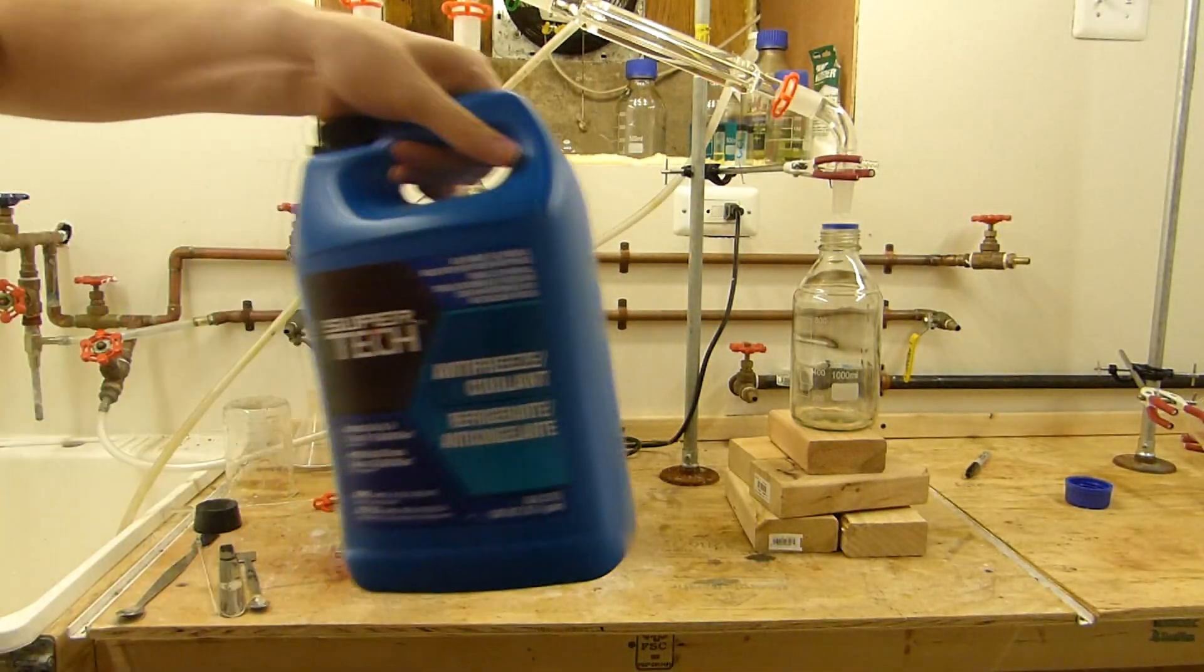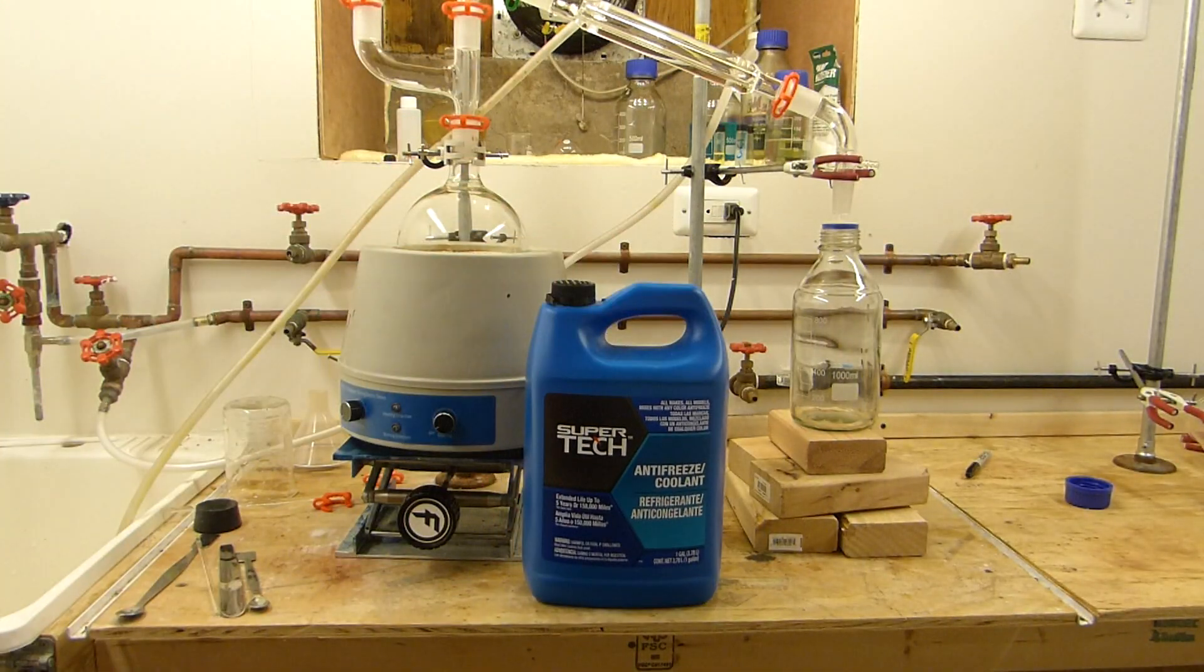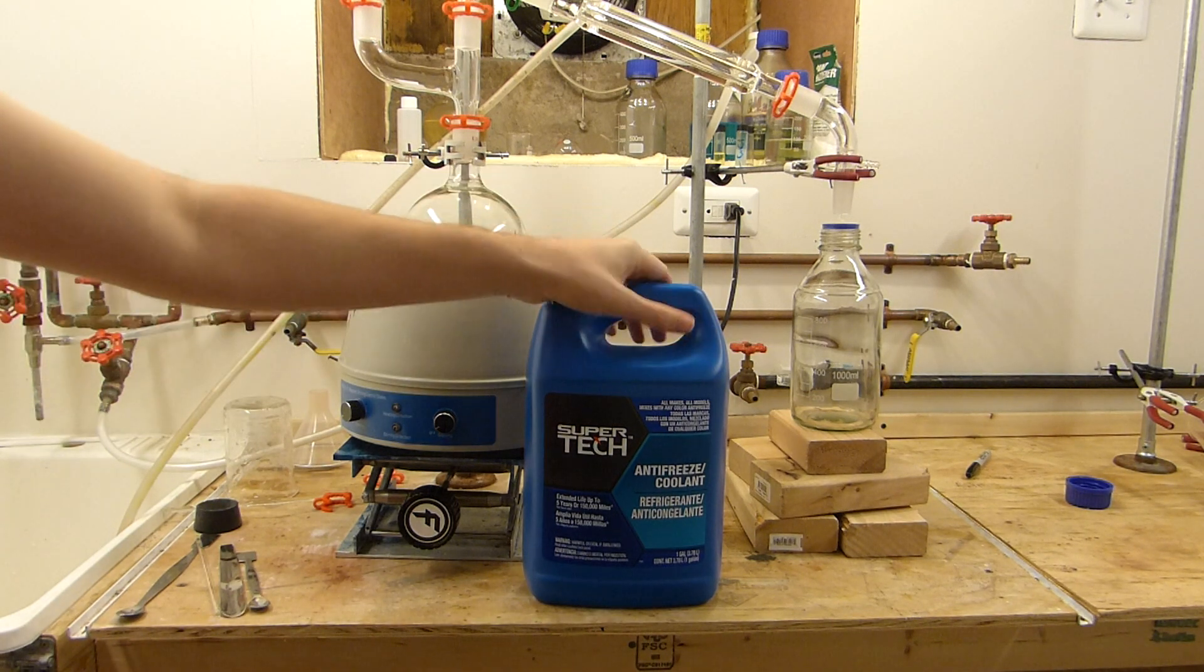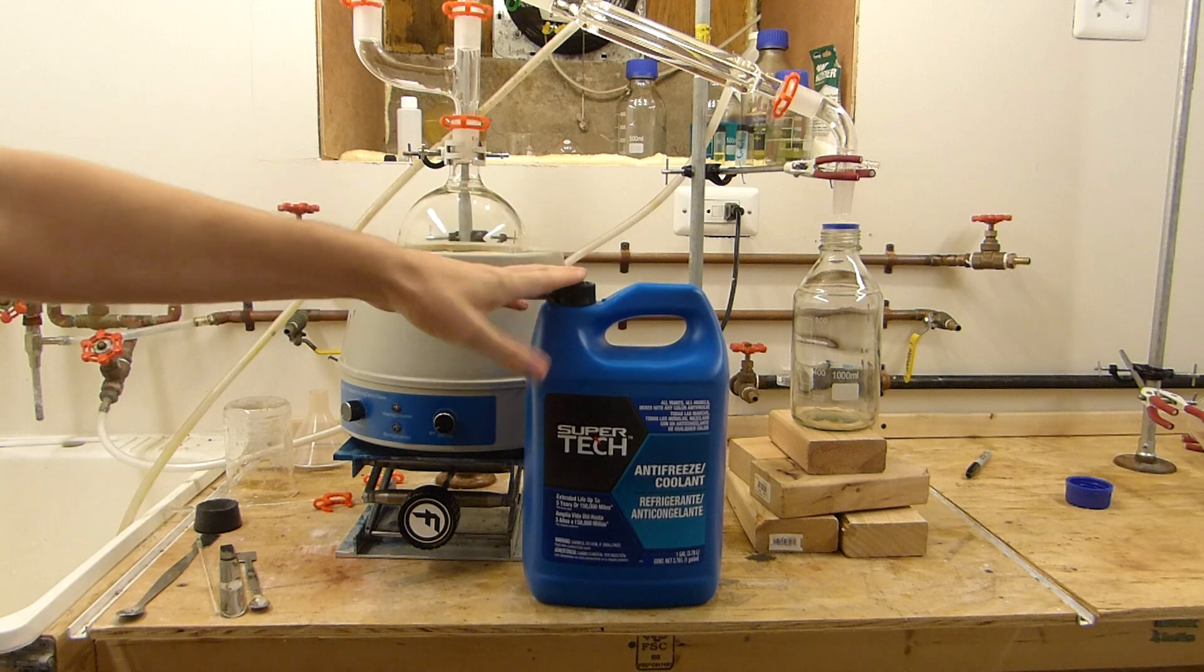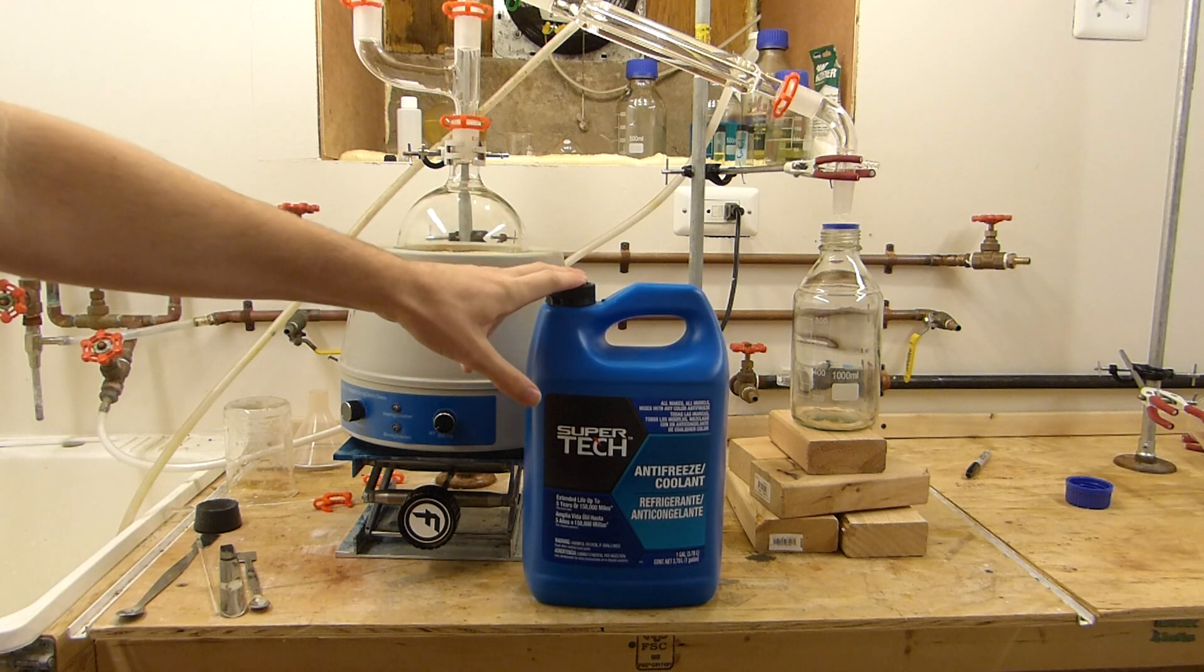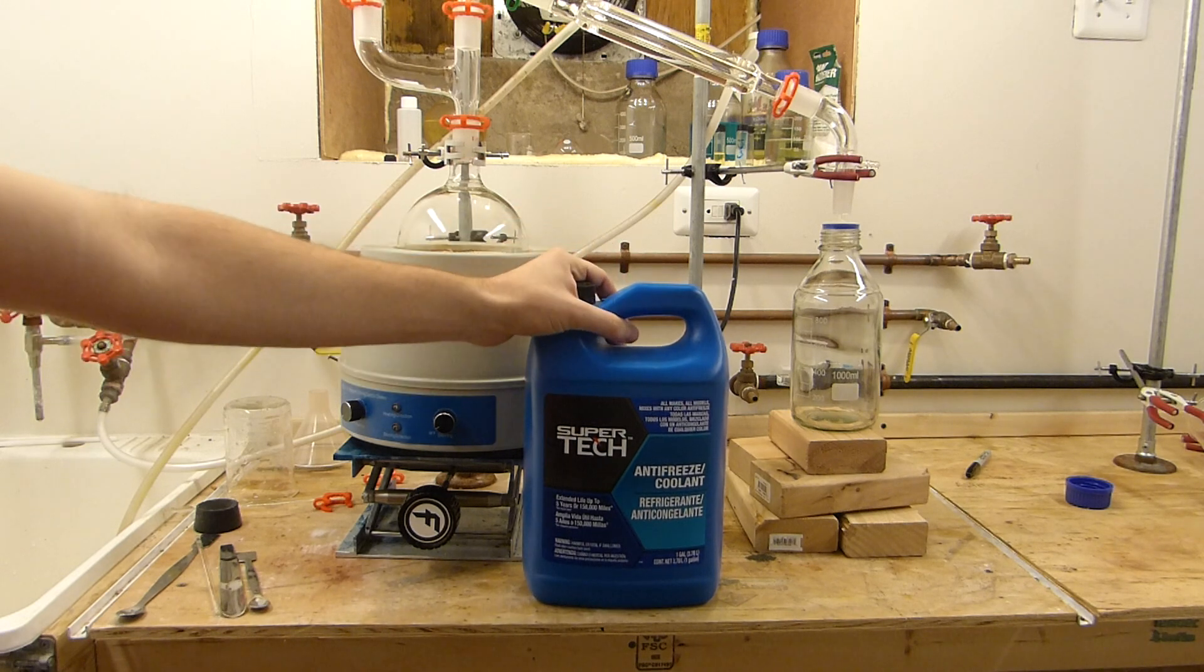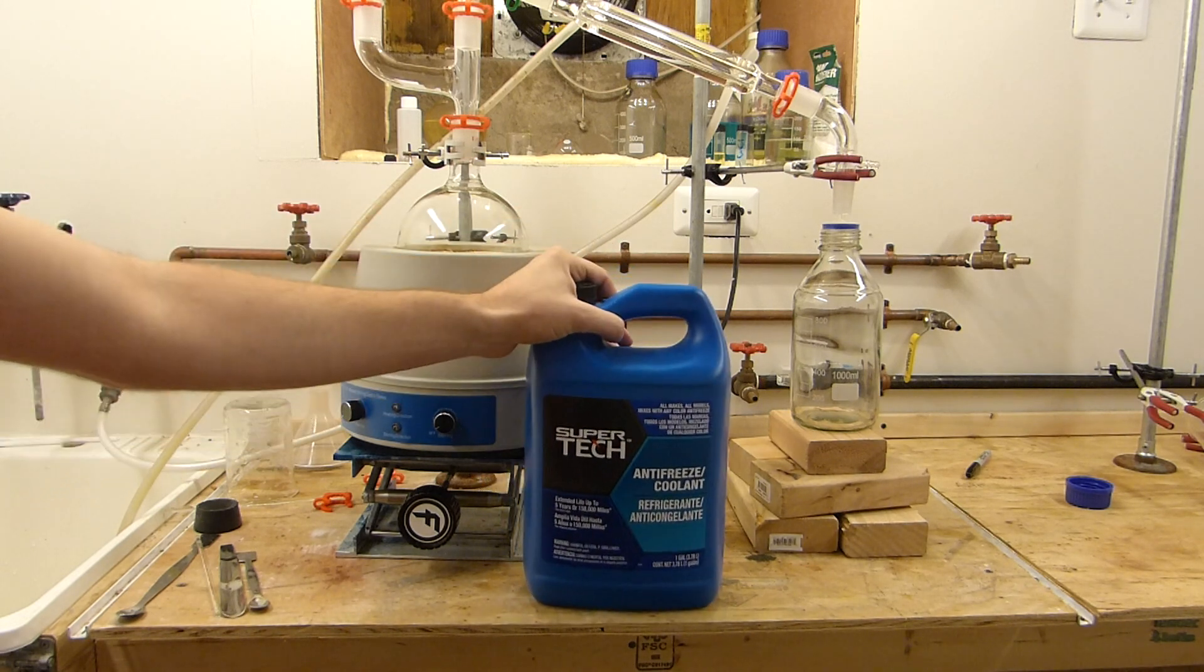If you look up all those components, you'll find that ethylene glycol has the lowest boiling point out of all of them by about 40 degrees. So we should be able to easily distill the ethylene glycol out of this antifreeze. If you also look at the MSDS, you'll see that almost 90% of this is ethylene glycol. So it's a very good source and it's also very cheap. I think this was seven dollars.